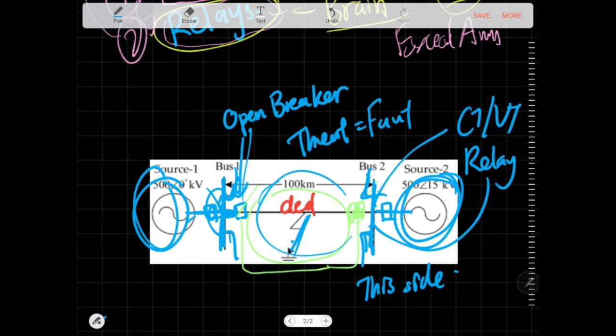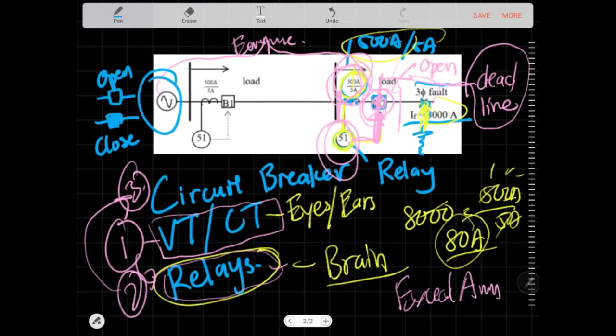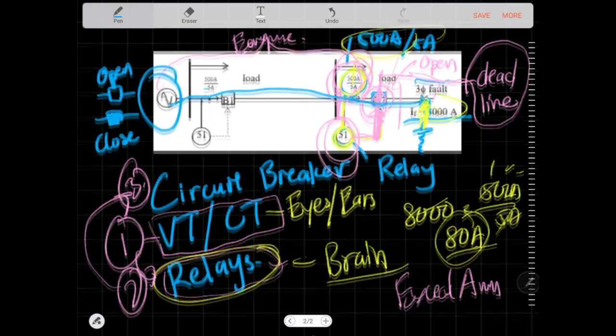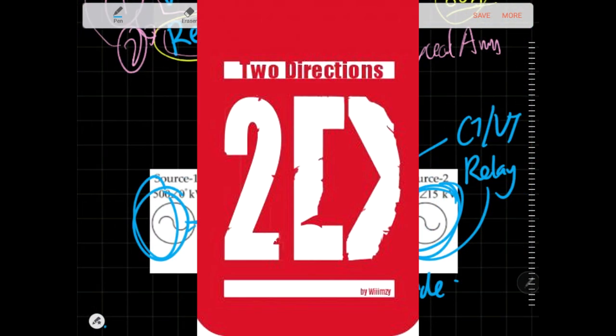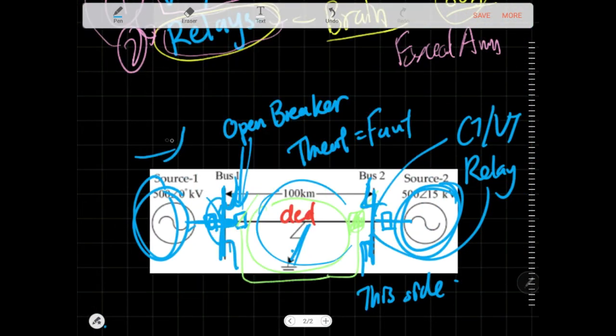And so this is the case where there's generators on both sides. Because usually the system, if it's an important line, you'll be feeding. Your line will not only be that simple, like just one direction generator. Here we have two directions. And usually this is normally the case. Sometimes maybe even three directions. Maybe not. But line only two points. So two directions are the maximum. So yeah, that's what we call coordination tripping.